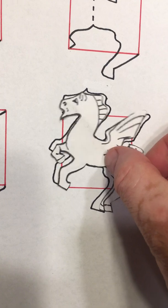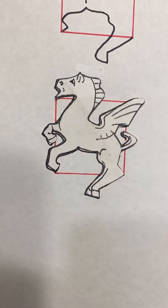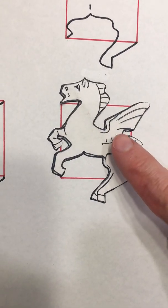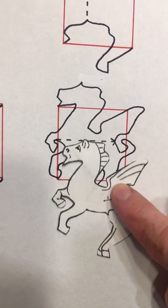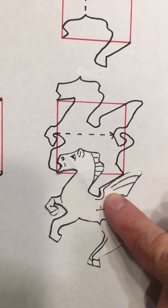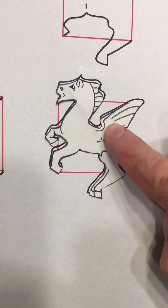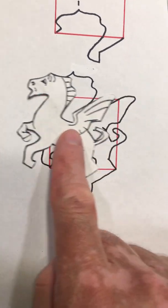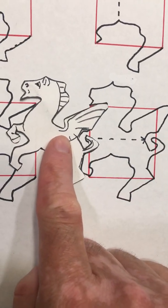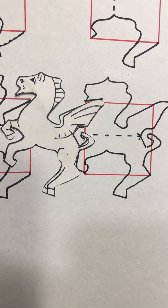And then all he had to do was color it in. And now watch. You can take that horse, you can slide it down, and it fits perfectly. You could take that horse and you can slide it across, and it fits perfectly in with the other horse.